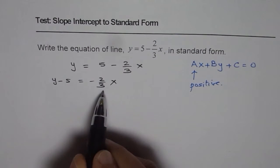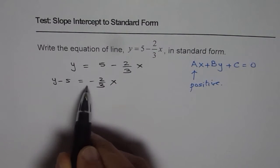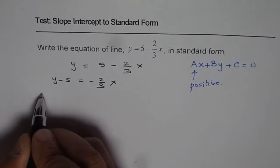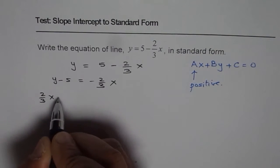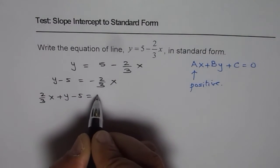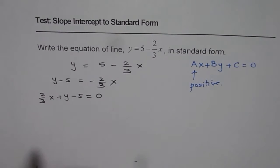Now, if we add 2 over 3, then we'll get 0 on this side. So, we'll get 2 over 3x plus y minus 5 equals 0.